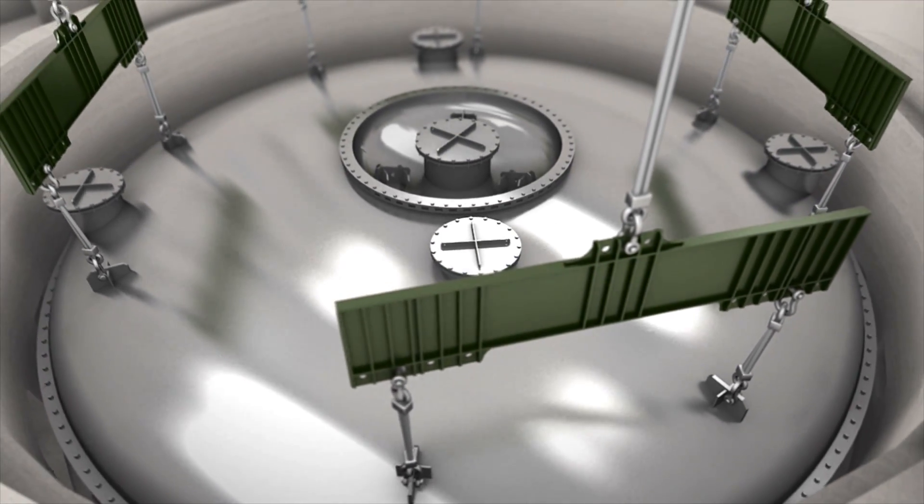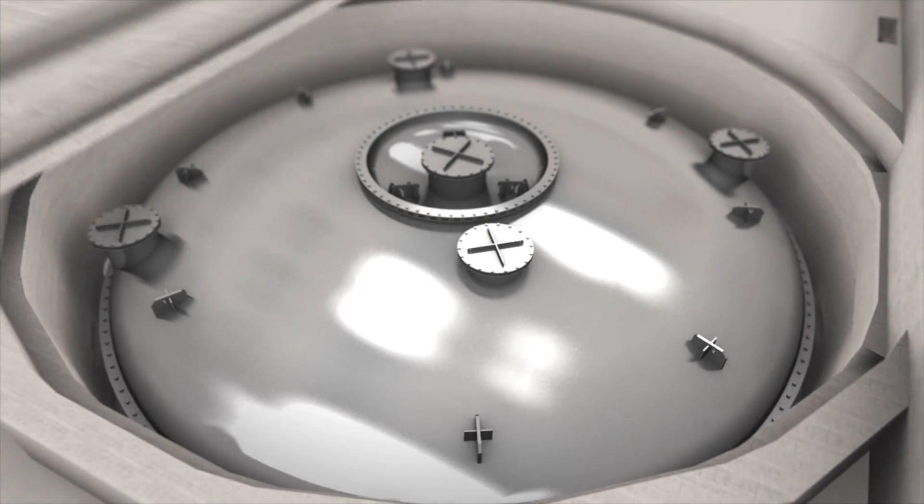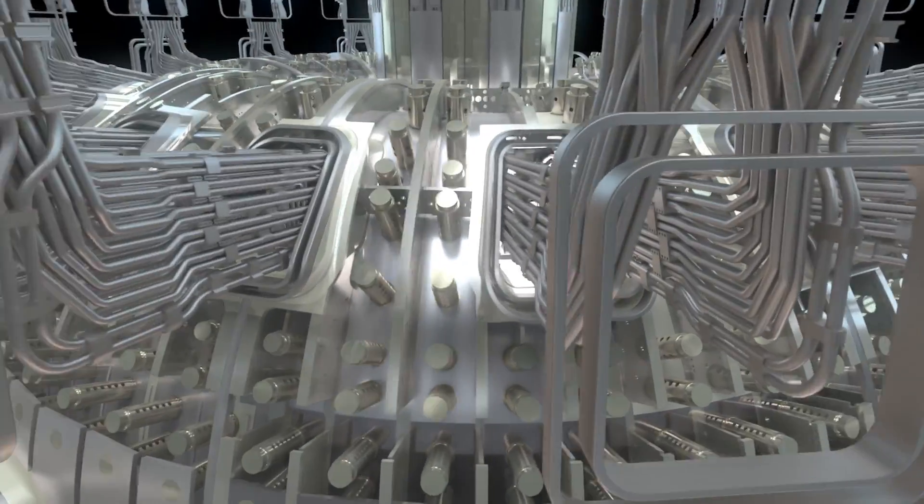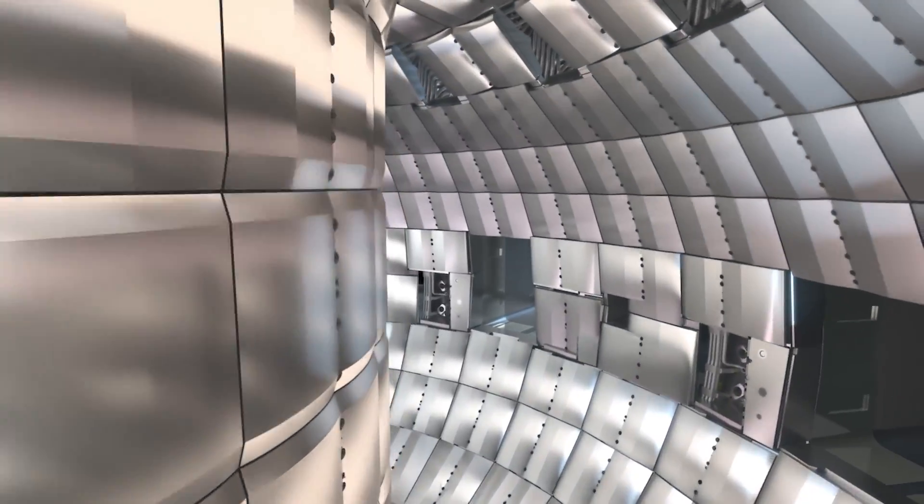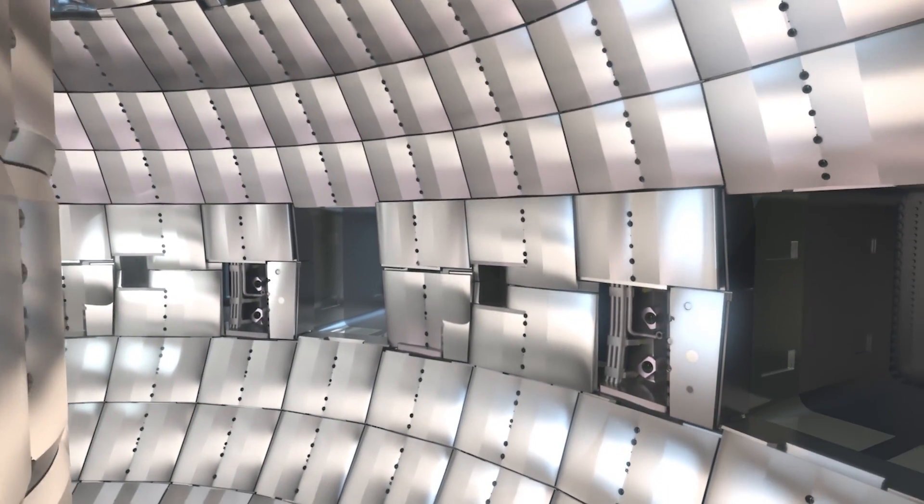The closure of the cryostat by late 2024 will mark the end of the first assembly phase. The ITER machine will undergo one year of integrated commissioning and testing, culminating in first plasma at the end of 2025.